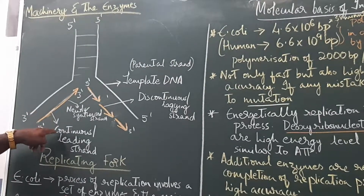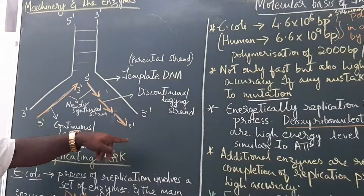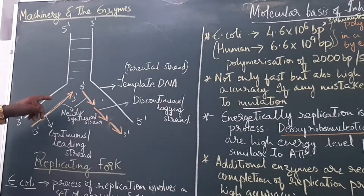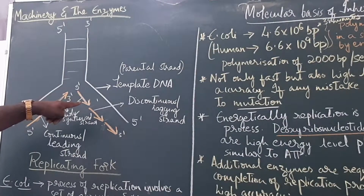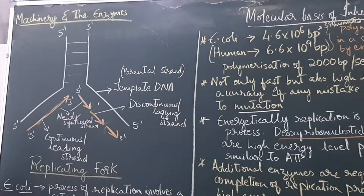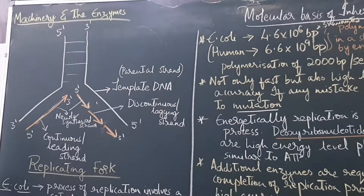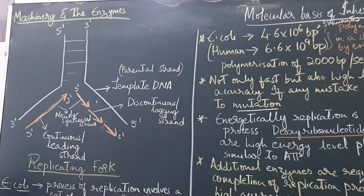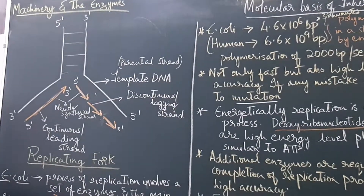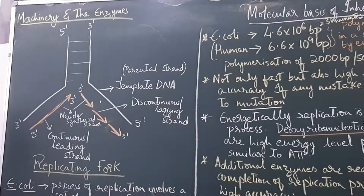Replication has been studied extensively in E. coli (Escherichia coli), a prokaryotic organism. In E. coli, the process of replication involves a large set of enzymes collectively called the replication machinery.